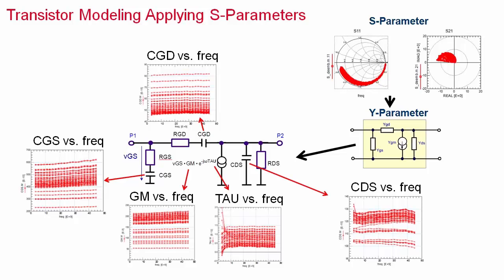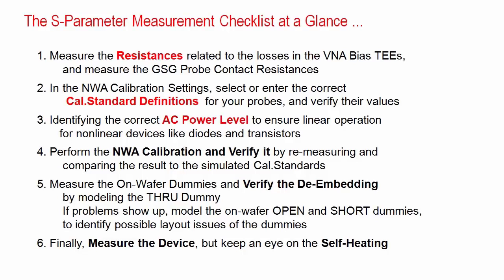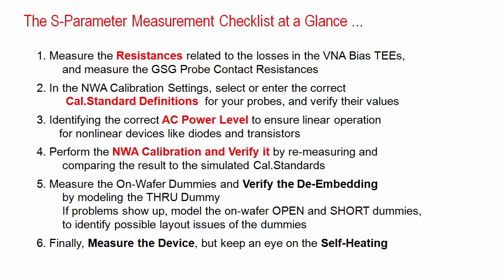This ends my tutorial about accurate verified S-parameter measurements. To wrap up, let me show you the checklist for your own measurement success. We have discussed the measurement of the DC bias contact resistances, how to define the corresponding cal-standards of the probes in the network analyzer, how to identify the specific AC power level to keep the transistor in linear mode, how to perform the calibration and to verify its quality, how to verify the de-embedding, and finally how to successfully measure the S-parameters and how to check for device self-heating problems.